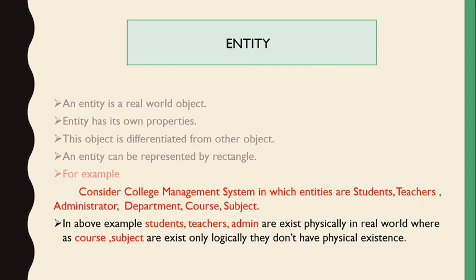In the above example, students, teachers, and admin exist physically in the real world, whereas courses and subjects exist only logically — they don't have physical existence. According to that, these are called tangible and intangible entities. Students, teachers, and admin persons are physically present, whereas courses and subjects exist but only logically, with no physical existence.